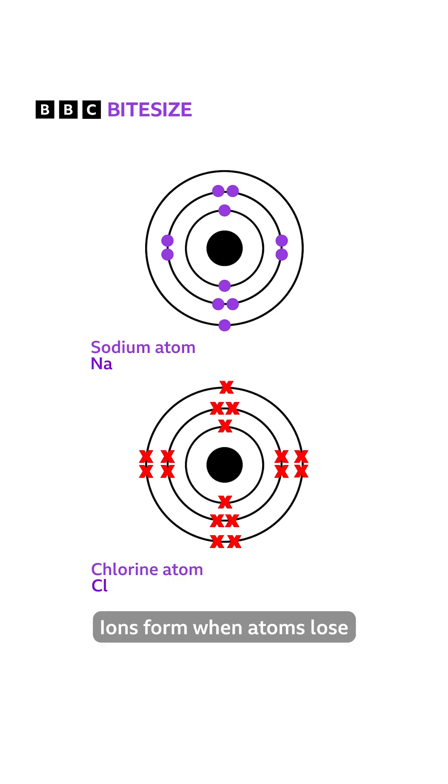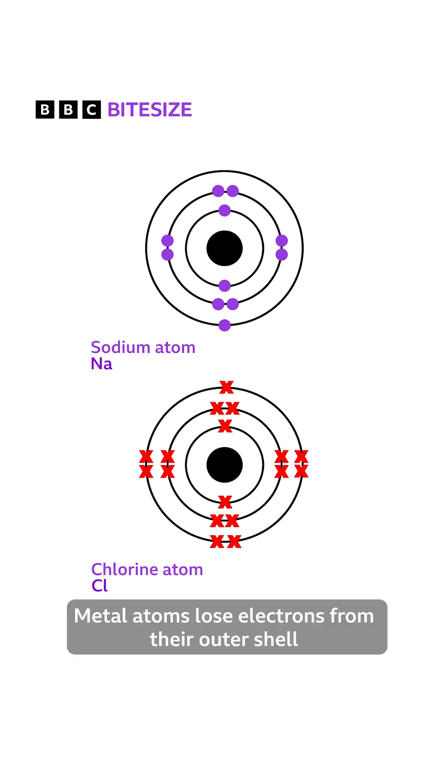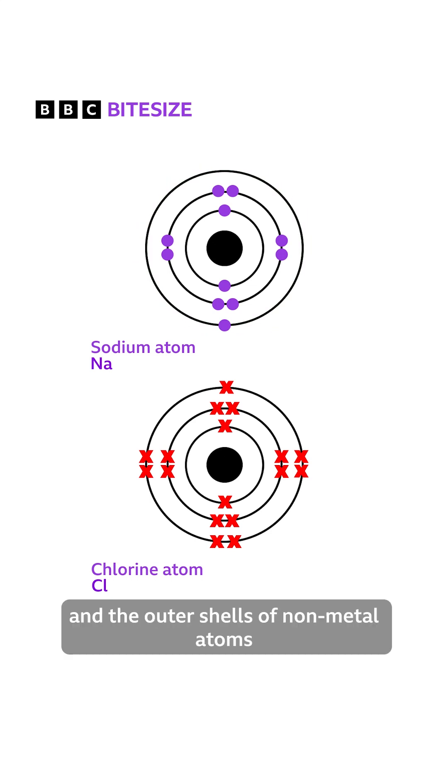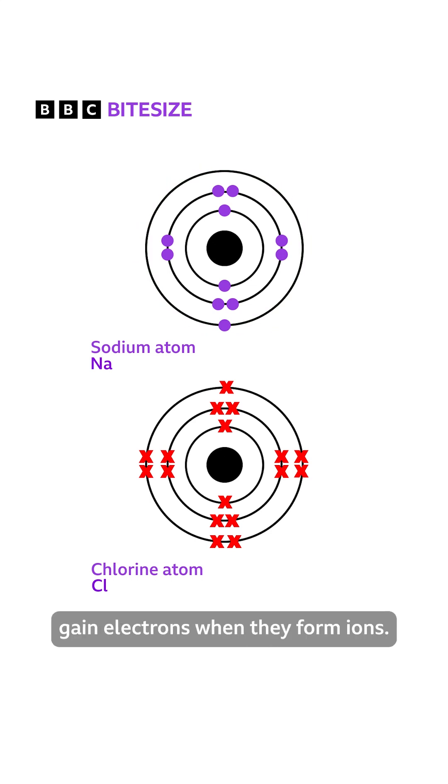Ions form when atoms lose or gain electrons to obtain a full outer shell. Metal atoms lose electrons from their outer shell when they form ions, and the outer shells of non-metal atoms gain electrons when they form ions.